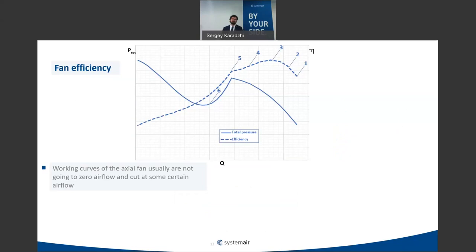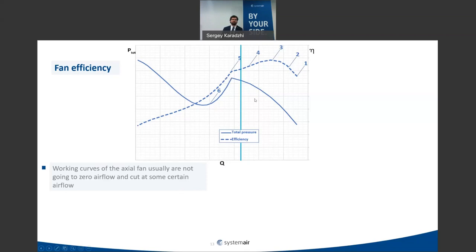Here is an example of the curve of an axial fan with a high pitch angle installation. You can see the efficiency curve and the total pressure curve. In any catalog, axial fan curves are cut at some point — you don't see the full curve as you would for centrifugal fans with backward curved blades. This is because beyond that cut-off point there is a very problematic region, and the curve is cut to provide a safety margin and avoid operating in stall.